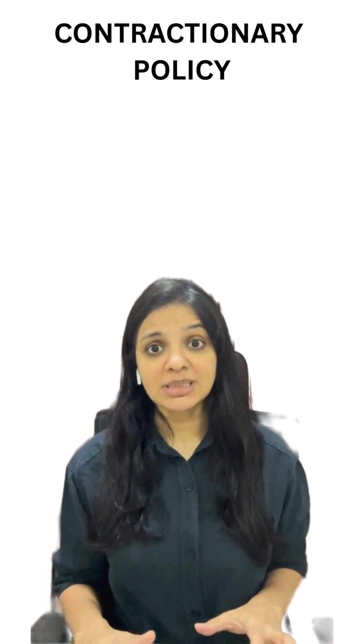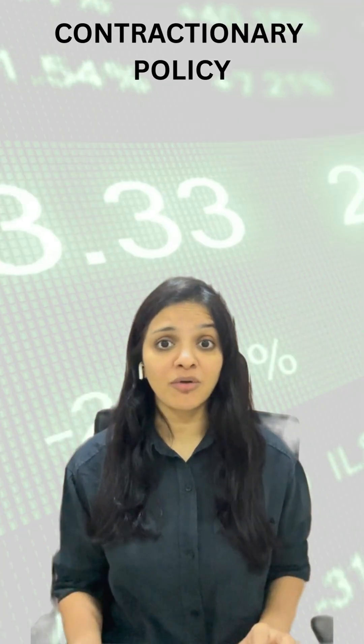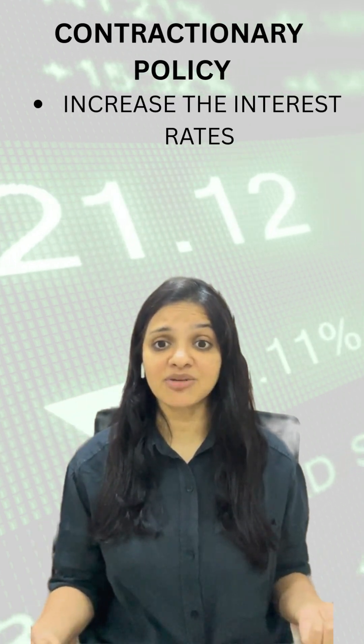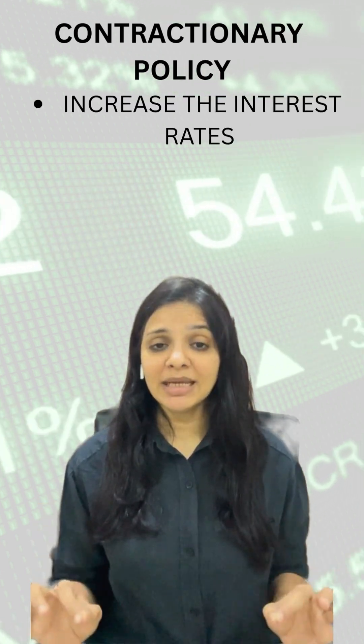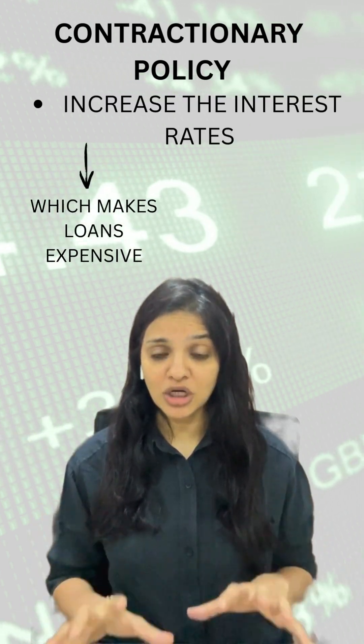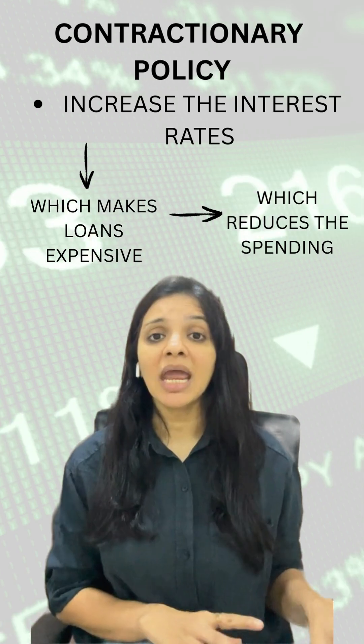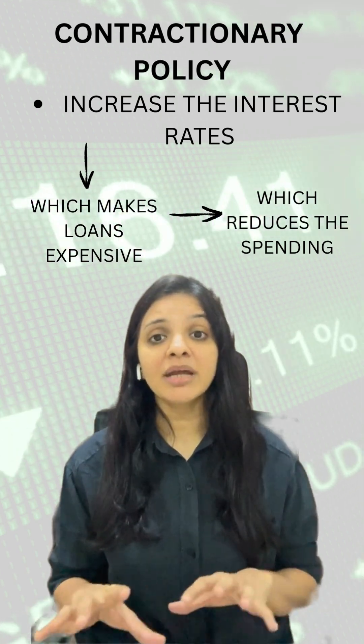Contractionary policy is used to control inflation. The government will increase the interest rate, making loans costlier, thereby reducing spending and bringing control on the rising prices.